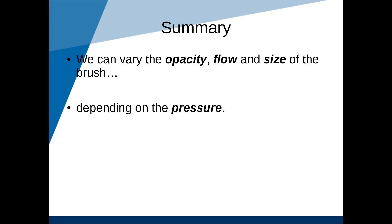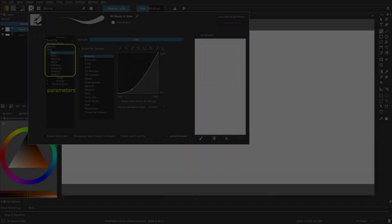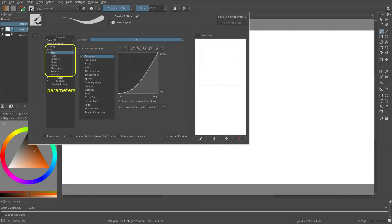That's all for now. We have learned that we can vary the opacity, flow, and size depending on the pressure. The opacity, flow, and size are called parameters, while the pressure is called a sensor input. Other parameters are listed here, and other sensor inputs which we can link are here. We will be talking about these in the next video.